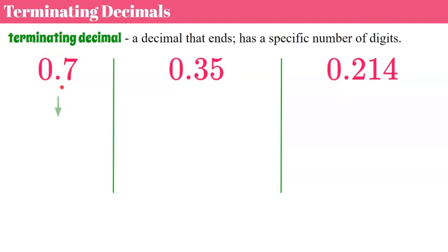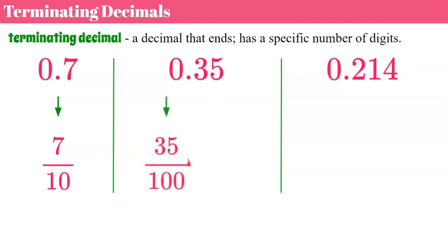So 0.7 is written as seven tenths. One decimal place — one digit is in the tenths position — so seven tenths. As you say this decimal mathematically is how you write it as a fraction, and seven tenths is already in simplest form. Next, 35 hundredths is written as 35 over 100. Both numerator and denominator are divisible by 5. When we divide by 5, we get 7 twentieths.